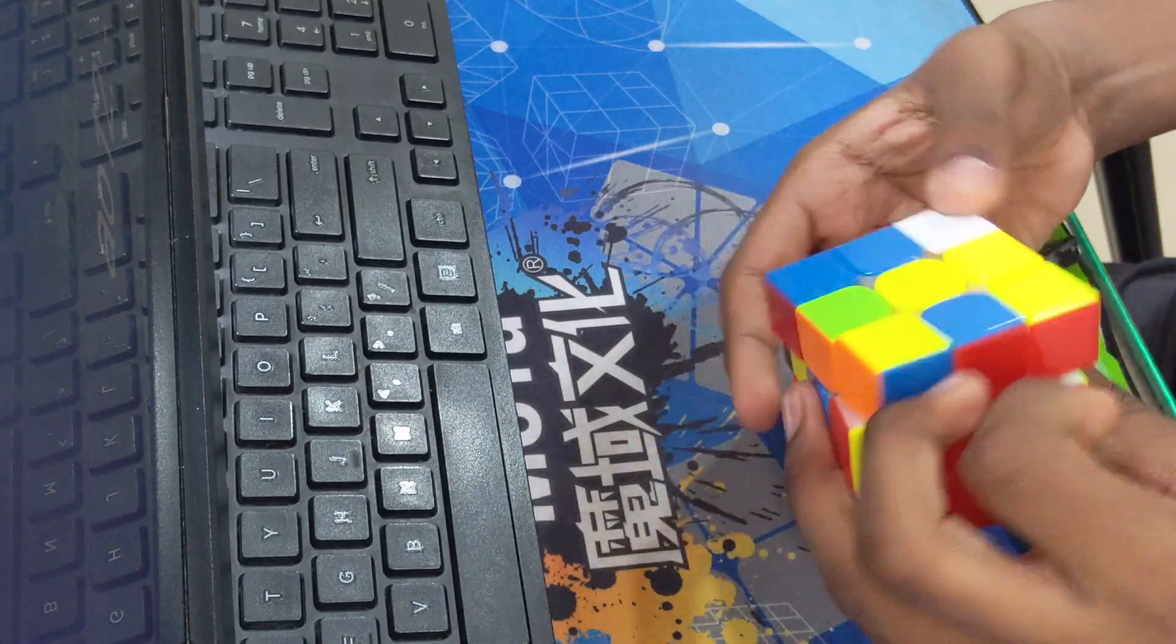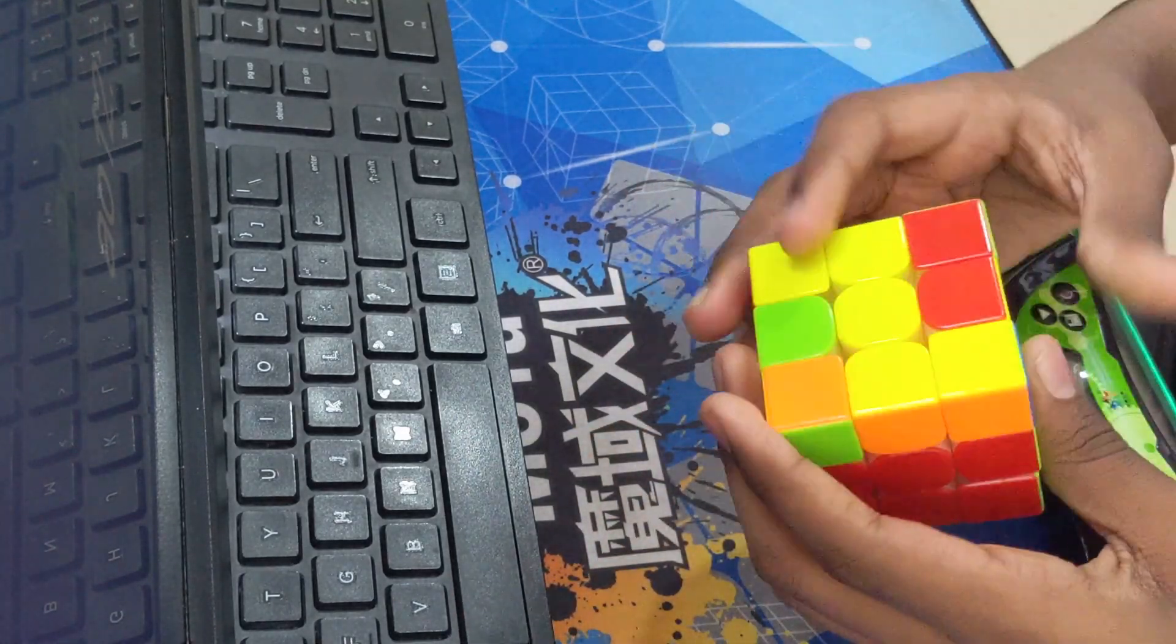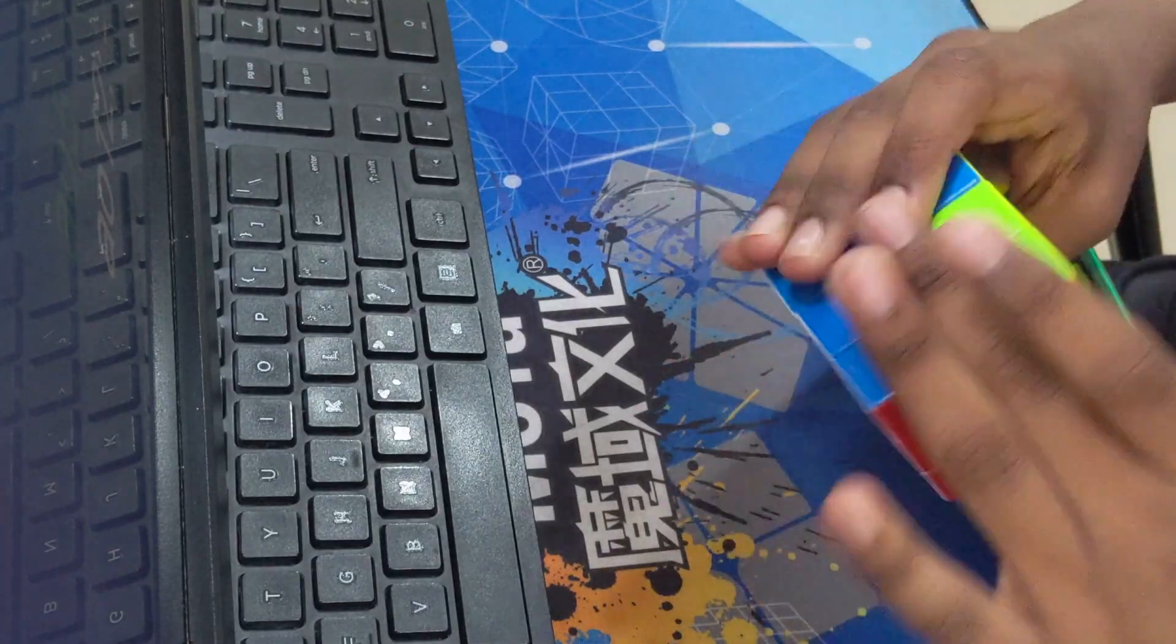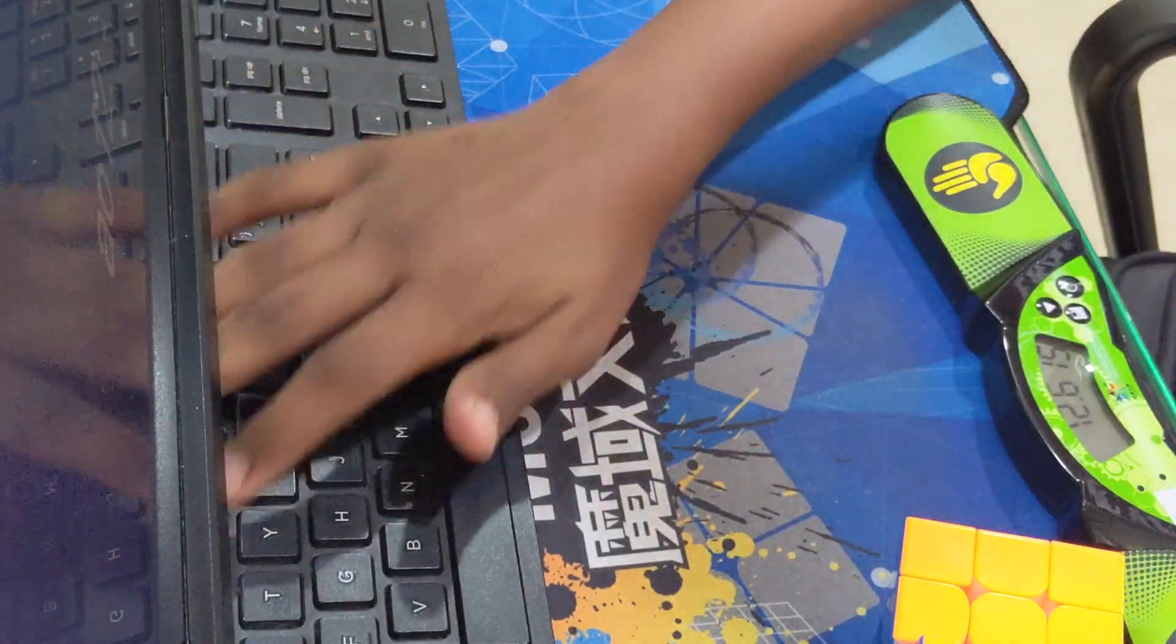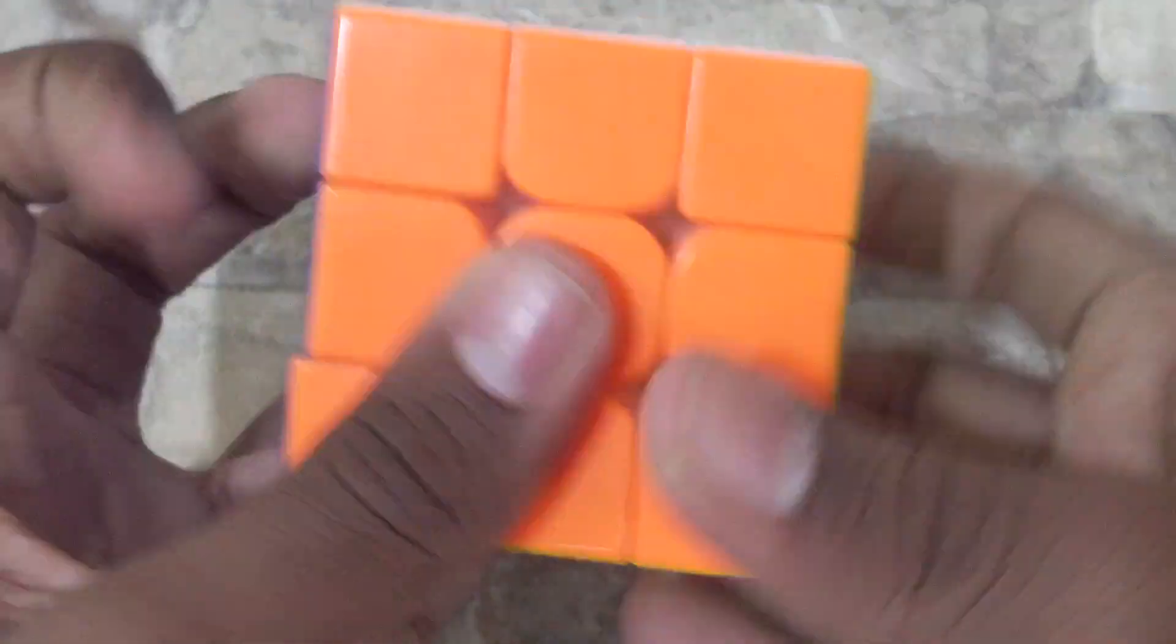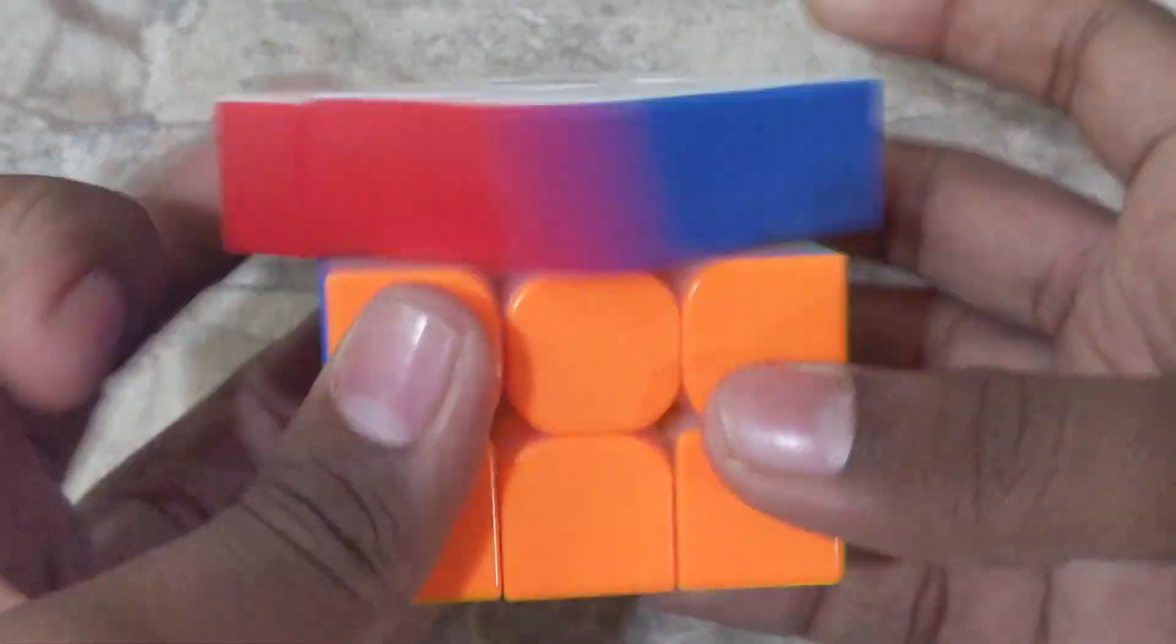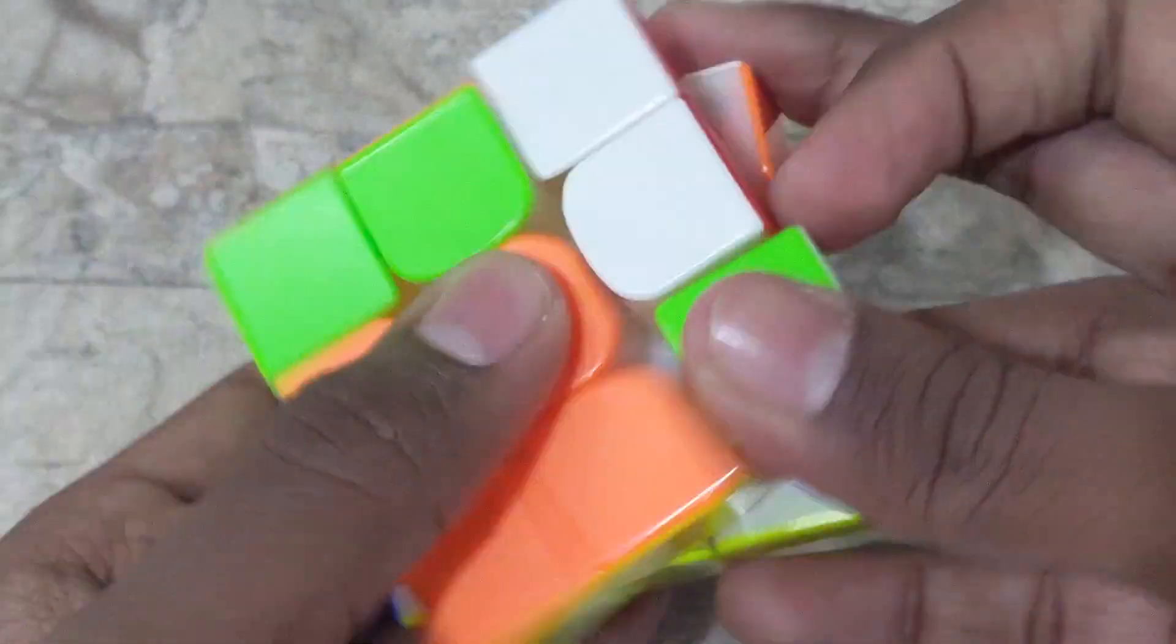To sum it up, I think the Valk 3 Elite M is a really great cube, and it is my favorite cube. I think it's the best cube currently on the market. Yes, this is my new main over the GTS 3M. If you main a Valk cube, I definitely think this will easily be your main. It combines the best of both the Valk cubes. That's it for this video, guys.